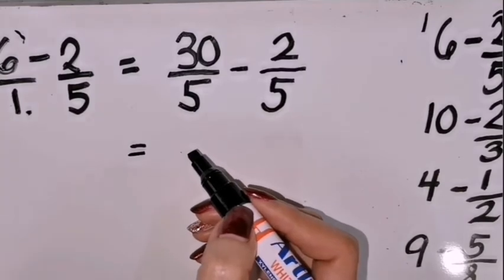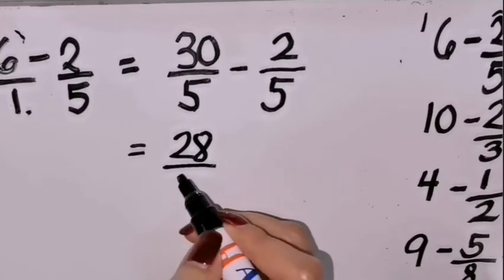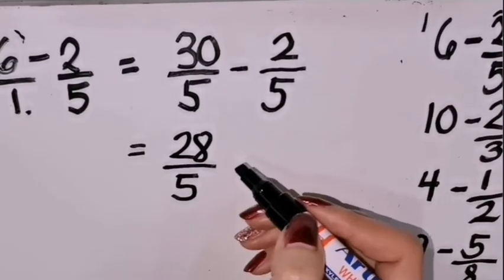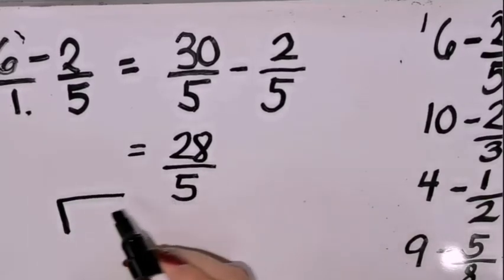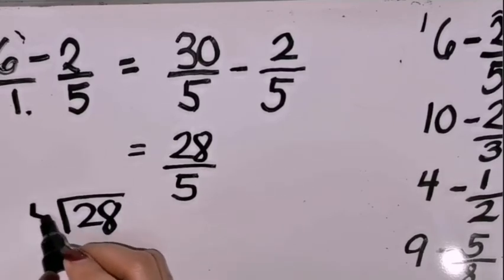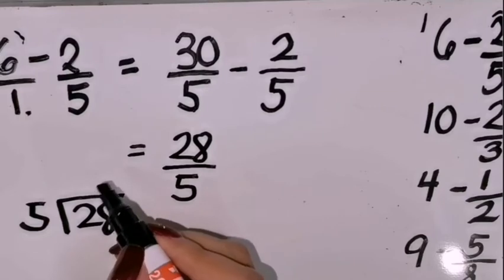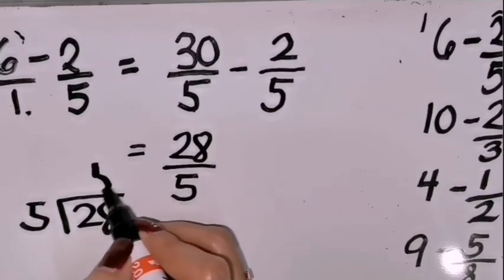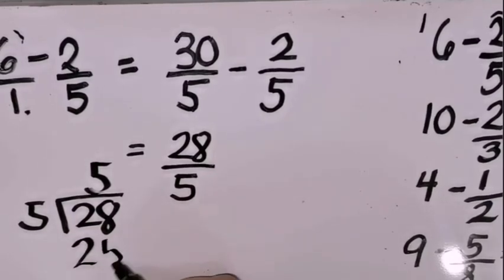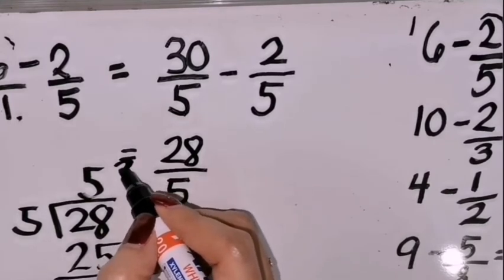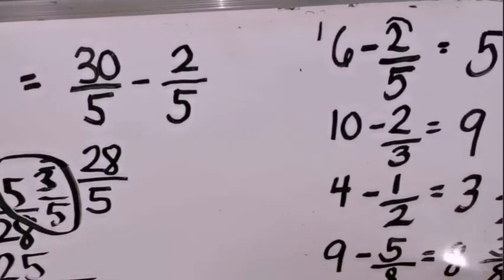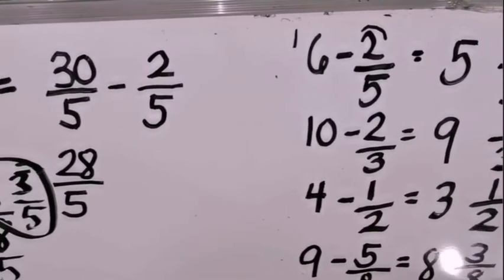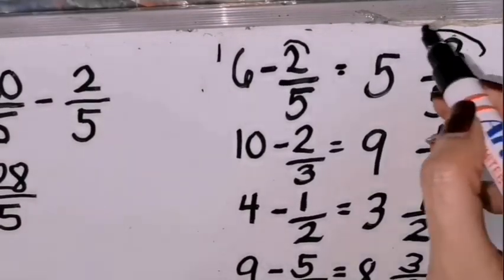30 minus 2 is 28, over 5. Now we have to convert this to a mixed number. That's 28 divided by 5. 5 goes into 28 five times — 5 times 5 is 25 — with a remainder of 3. So the answer is 5 and 3 fifths. Do we have the same answer? Yes, we do — same as what we got with the quick method.